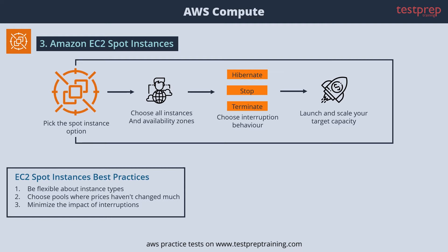Two: choose pools where prices haven't changed much. Because prices adjust based on long-term demand, popular instance types tend to have more price adjustments. Therefore, picking older generation instance types that are less popular tends to result in lower costs and fewer interruptions. Similarly, the same instance type can have different prices in different availability zones.